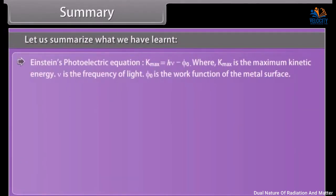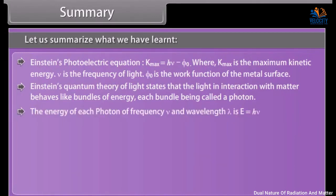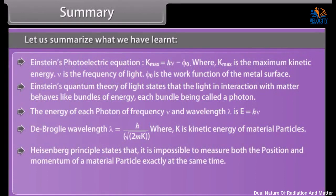Einstein's photoelectric equation: K-max = hν − phi-zero, where K-max is the maximum kinetic energy, ν is the frequency of light, and phi-zero is the work function of the metal surface. Einstein's quantum theory of light states that light in interaction with matter behaves like bundles of energy, each bundle called a photon. The energy of each photon of frequency ν and wavelength λ is E = hν. The de Broglie wavelength is λ = h/√(2mk), where k is the kinetic energy of material particles. Heisenberg's principle states that it is impossible to measure both the position and momentum of a material particle exactly at the same time.